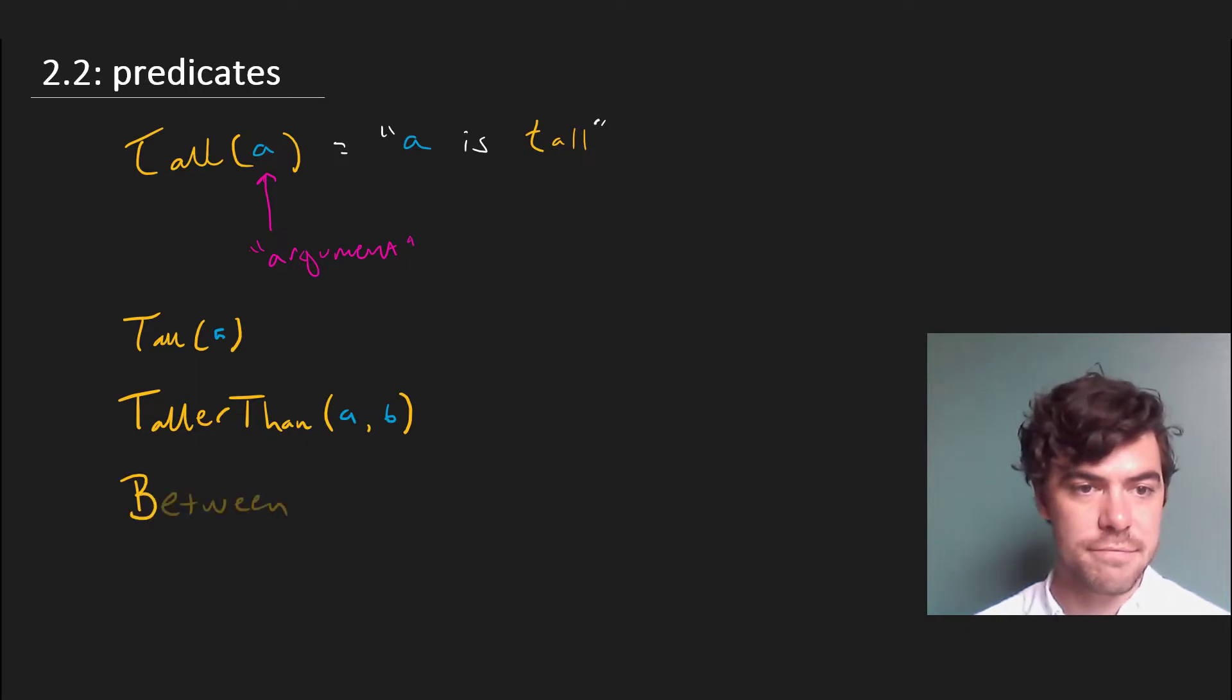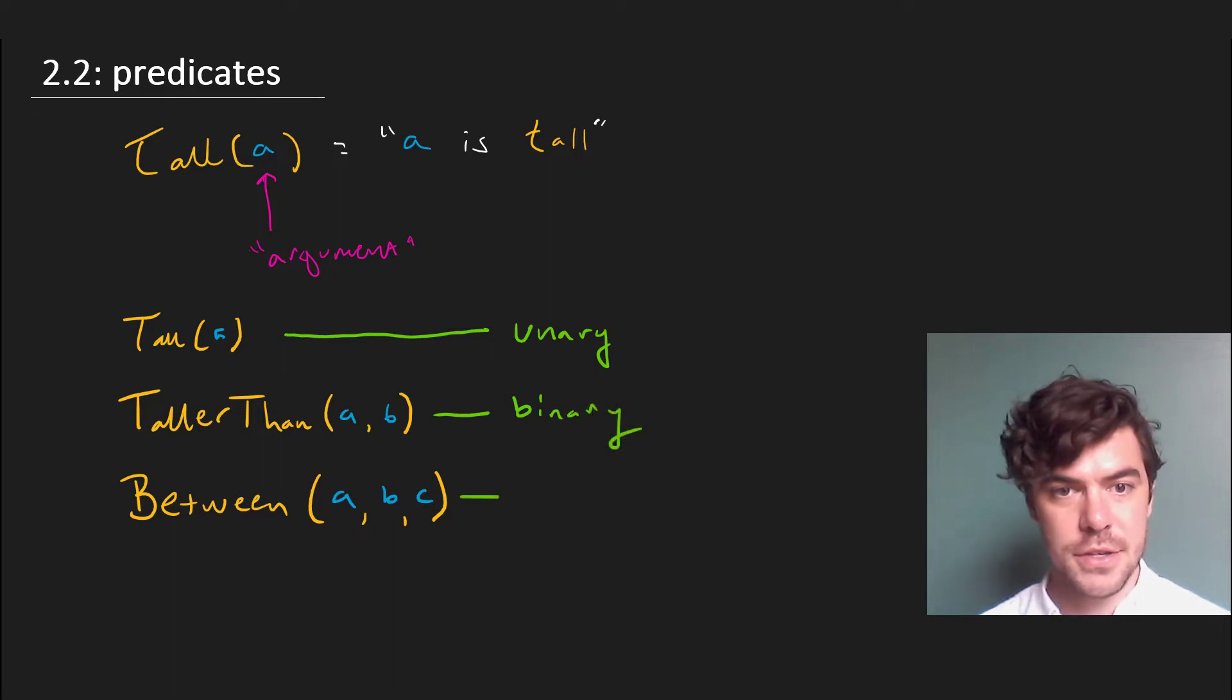For instance, between can only be said concerning three objects that something is between two other things. So we can say, for instance, that A is between B and C. The name for this first kind of predicate, which takes only one argument, is unary. The second type, which takes two, is called a binary predicate. And the third type is called a ternary predicate. And we could just keep going as long as we wanted to, creating more and more complex predicates.